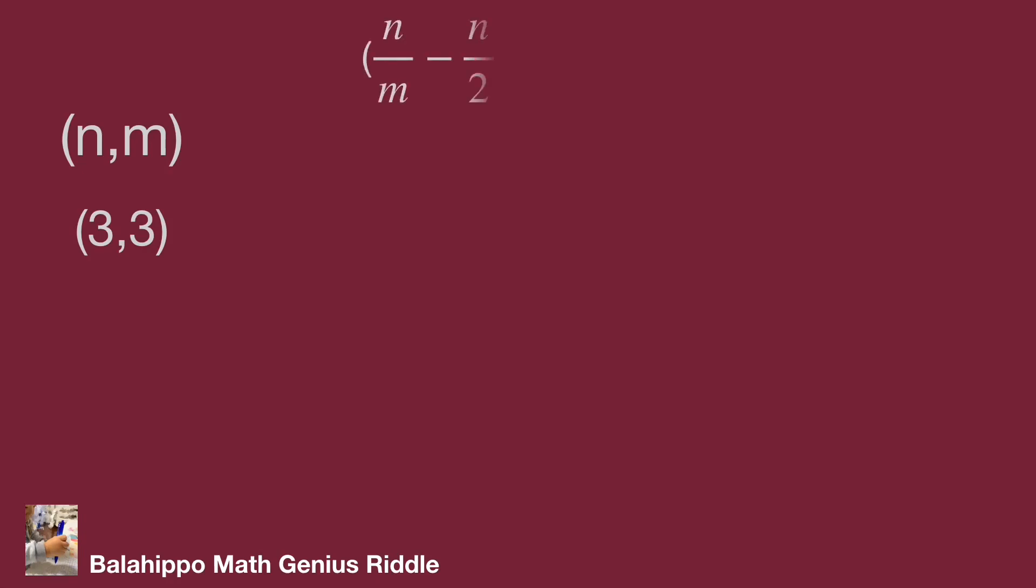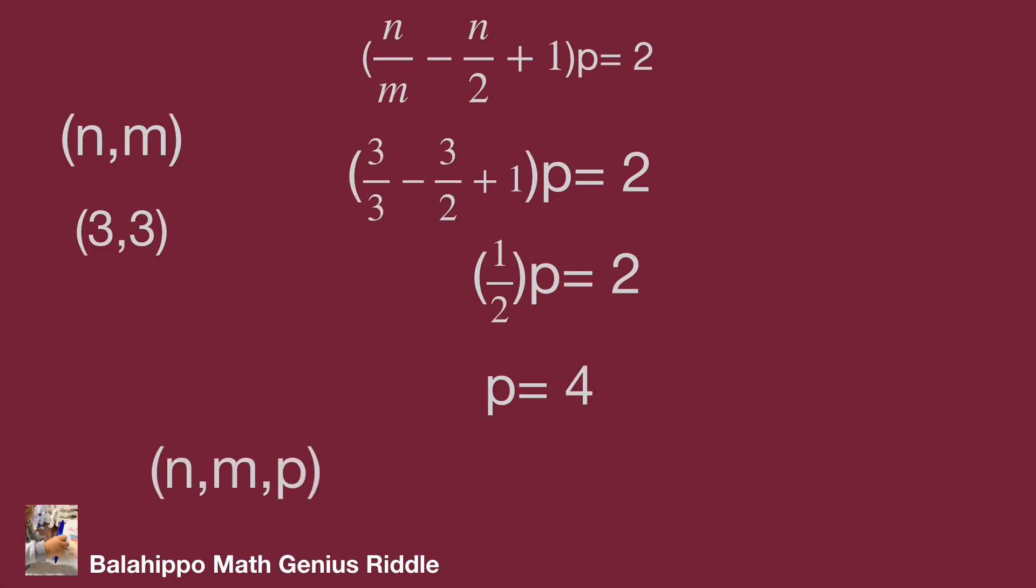Substitute n, m by 3, 3 into the equations. Quantity n over m minus n over 2 plus 1 multiply p equal to 2. Then 1 over 2 times p equal to 2, p equal to 4. So the number group for n, m, p is 3, 3, 4.